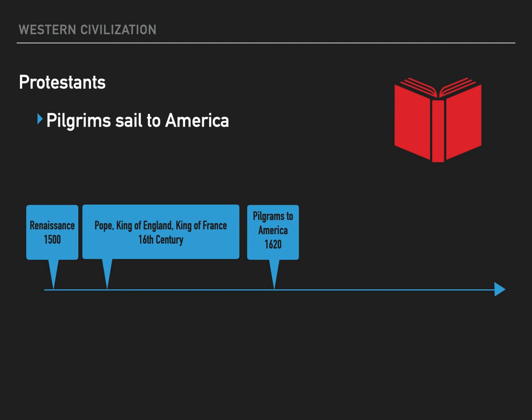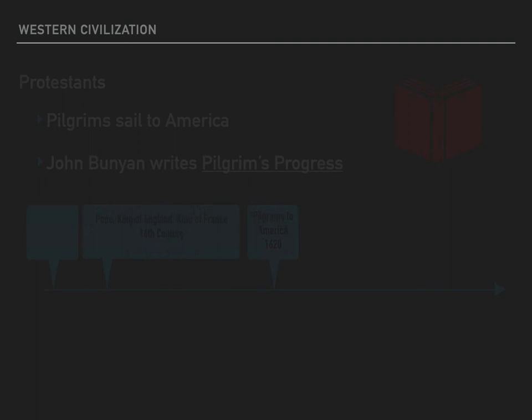In 1620, Pilgrims took the opportunity to sail in the Mayflower and start a colony in the New World where they could live according to their own conscience and not the king's. In 1678, John Bunyan, a Protestant preacher, wrote Pilgrim's Progress while in prison — he was jailed because he wouldn't conform to the government's religion. If you haven't already read his book, it should be next on your list.